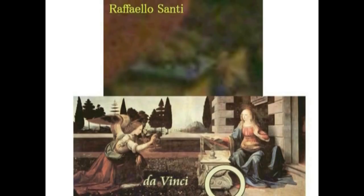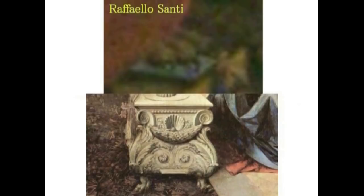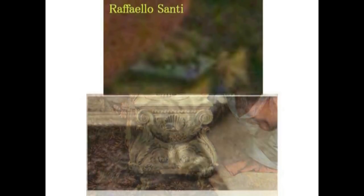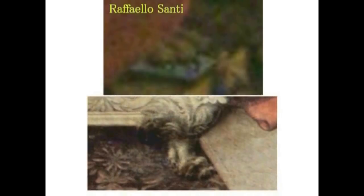ここを見てください。三本指の、まさに悪魔の指、足の指が描いてあります。中世の画家たちは、このようにして隠し絵という形で自分たちの思想を織り込みました。下がダ・ヴィンチの受胎告知の絵です。この絵の中にも隠し絵が仕込んであります。このフクロウの置物の下を見てください。これはマリアの足です。